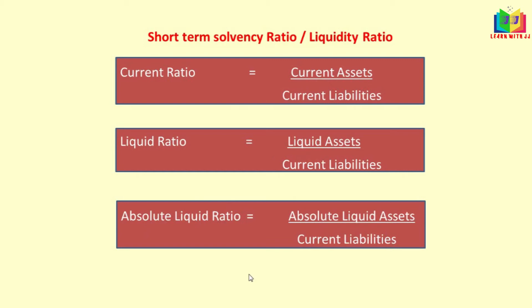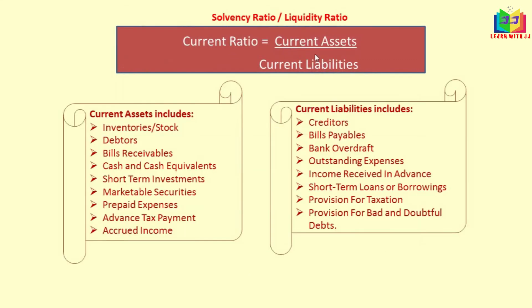Before solving a problem, let's clarify what current assets, current liabilities, liquid assets, and absolute liquid assets are. Current assets are assets which can be easily converted into cash within one year. These include inventories (stock), debtors, bills receivables, cash and cash equivalents, short-term investments, marketable securities, prepaid expenses, advanced tax payment, and accrued income.